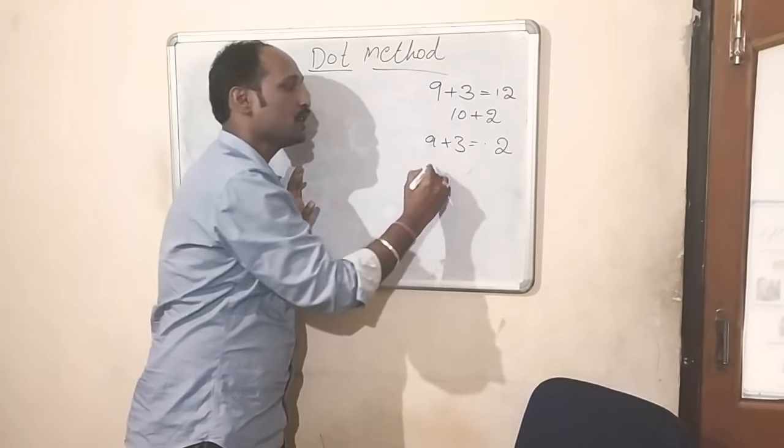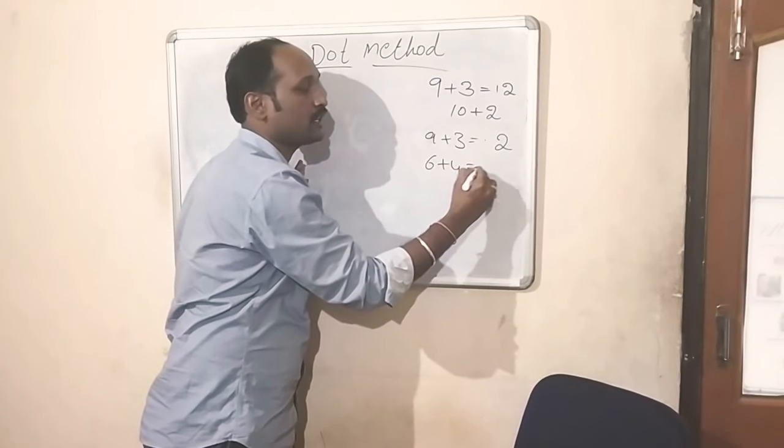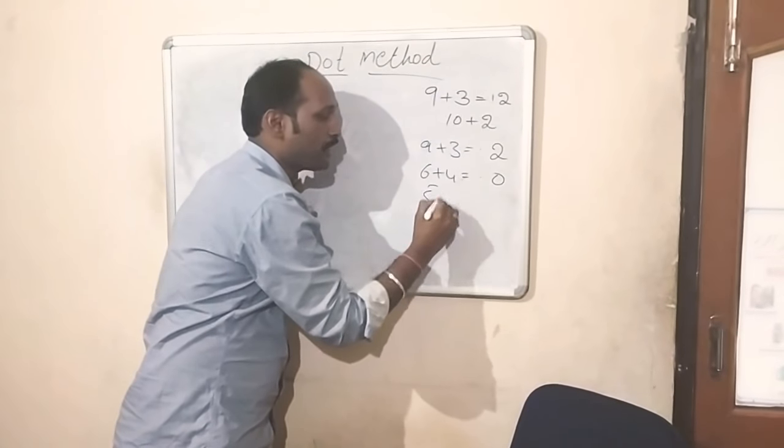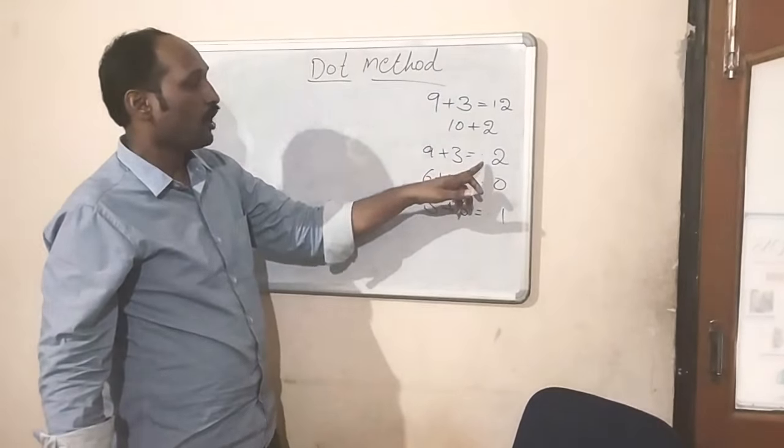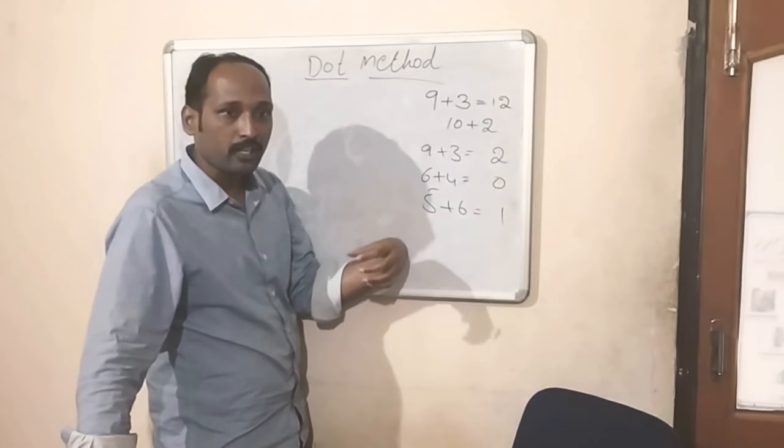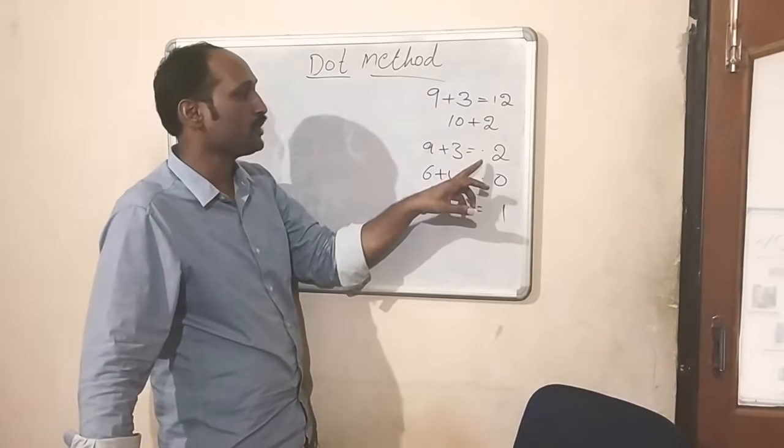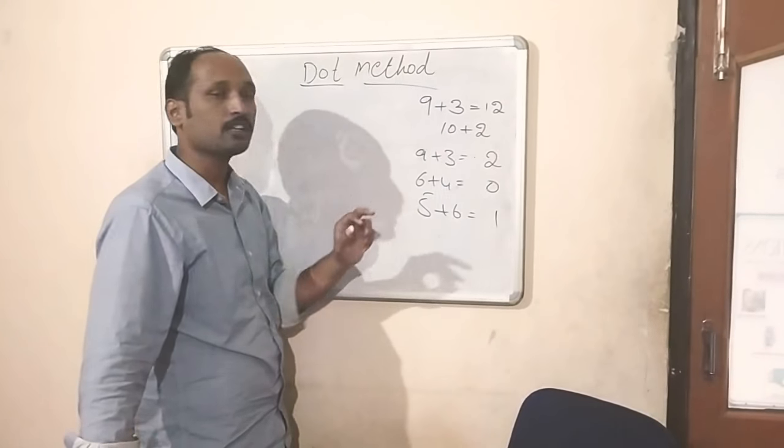We are saying dot 2. 6 plus 4 means we can say dot 0. If it is 5 plus 6, means dot 1. Dot is called 10. We are dropping 10, and for recognition purpose we are keeping the dot.